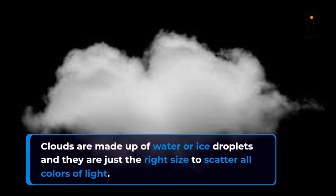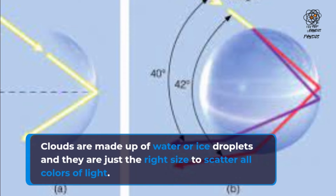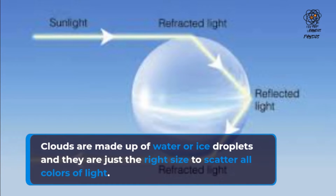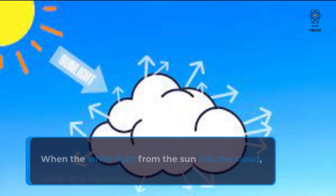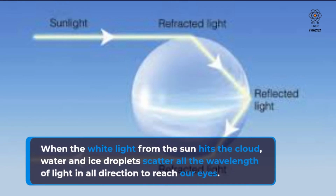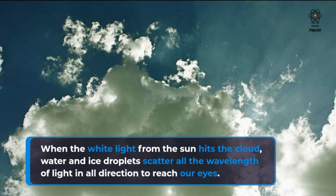Clouds are made up of water or ice droplets and they are just the right size to scatter all colors of light. When the white light from the sun hits the cloud, water and ice droplets scatter all the wavelengths of light in all directions to reach our eyes.